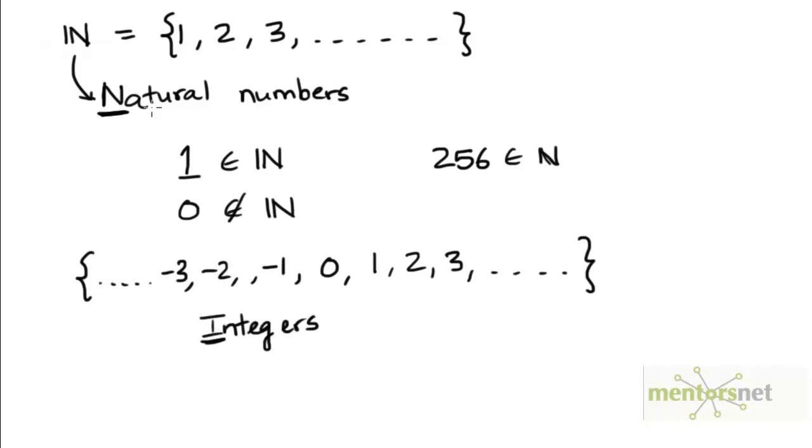So the integers are the natural numbers, their negatives as well as 0. Now the convention is to represent the set of integers by the letter Z.